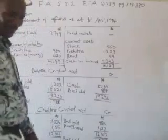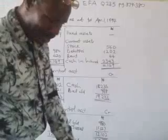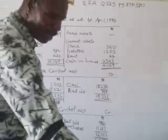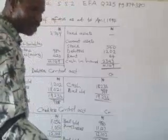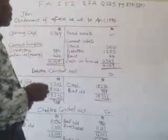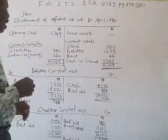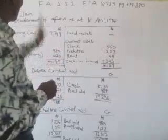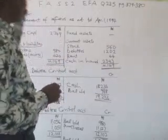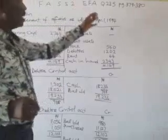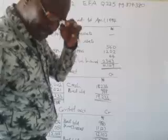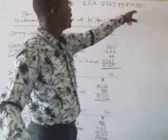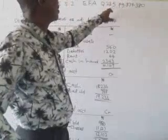Good day, my dear students. In our last class, we prepared a net profit of Mr. Rafael from the data given to us. But in this case now, we are preparing the net profit starting with the SOA. The question we are solving today is in your textbook, page 379 to 380, equation 23.5.